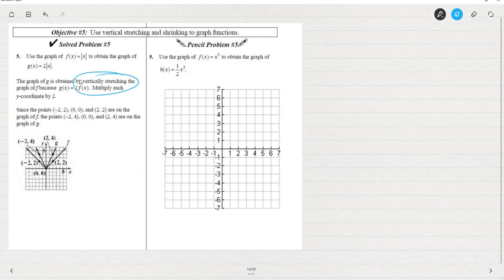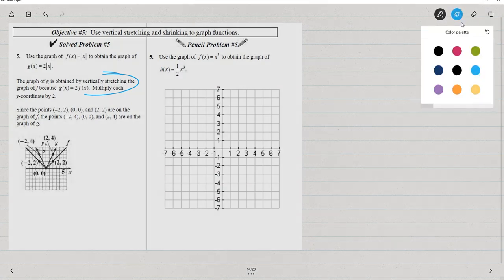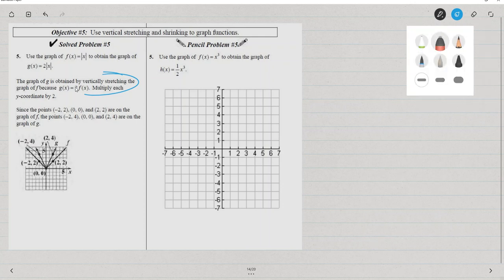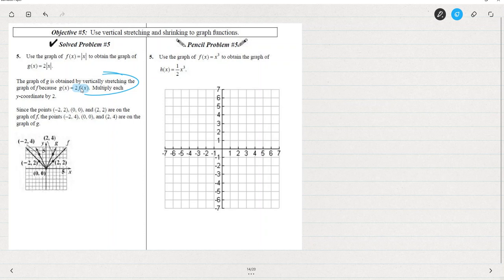This next shift is a vertical stretching. When we multiply by 2, so we take the f of x and we multiply it by 2. So if f of x is the absolute value of x, here's that absolute value of x where we started. And if I stretch it by a power of 2, then that means that the origin stays the same, but this point 2, 2, would go to double the y, so 4.